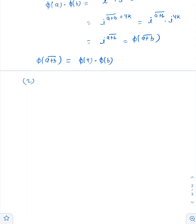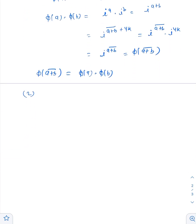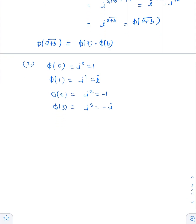We can see from the function definition that phi of 0 equals i to the power 0 equals 1, phi of 1 equals i, phi of 2 equals i squared equals -1, and phi of 3 equals i cubed equals -i. This shows that phi is one-one.